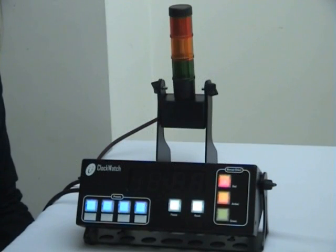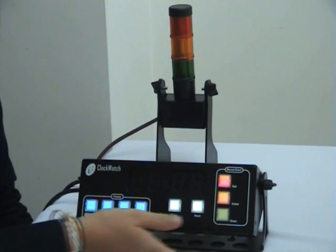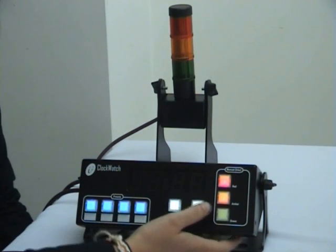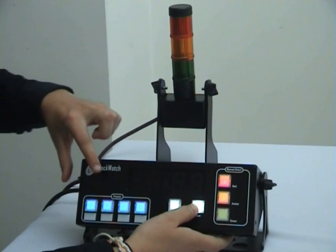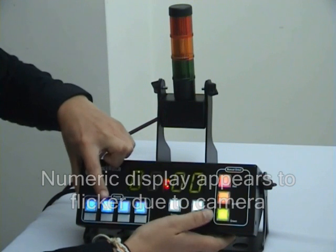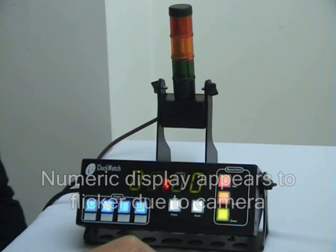To program the ClockWatch, begin by making sure the ClockWatch has been reset. To do this, push the reset button. Now select the reset button and preset button you wish to program at the same time. Press and hold for 5 seconds until you see the display change, then release. You will see zeros in the display.